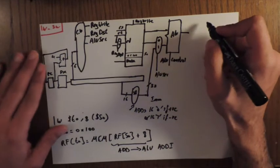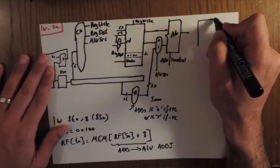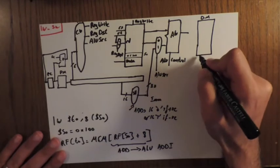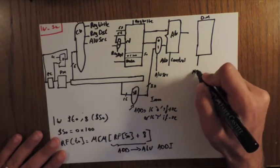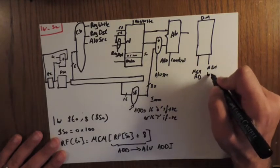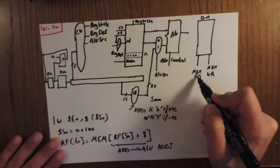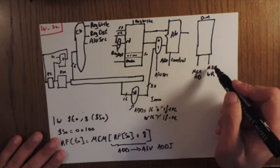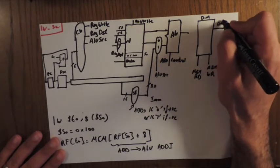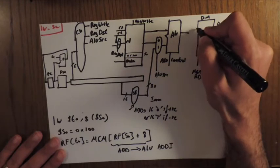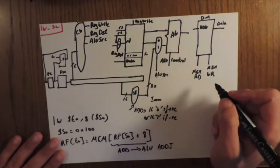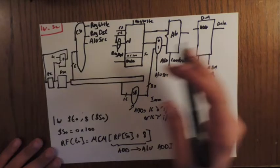To complete the load word, we need to add a data memory component. It has two control lines: memory read and memory write. Memory read being 1 means we can read from data memory; memory write being 1 means we can write to memory. It has an address input and a data output — whatever the address is, the data comes out.